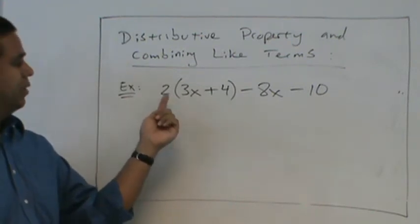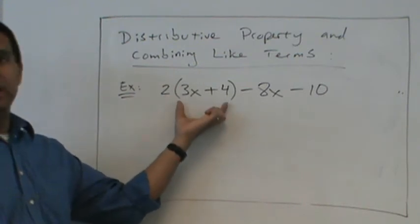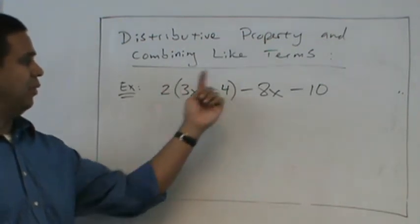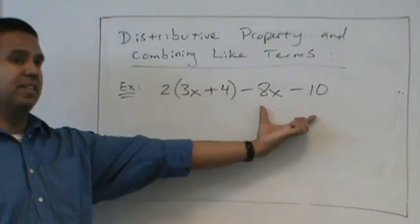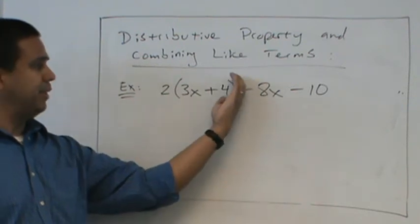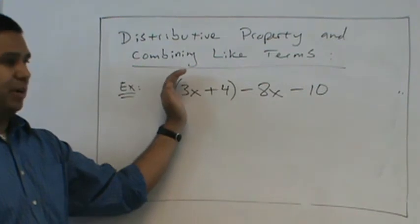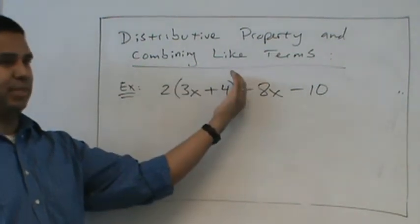So we're going to distribute that 2 only inside the parentheses. Do not distribute that 2 with the 8x or with that 10. These are not in the parentheses. This closed parentheses, that tells you stop multiplying. Start multiplying, stop multiplying.